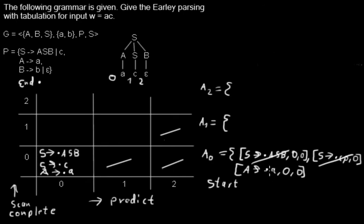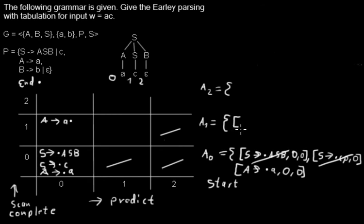Now I proceed with A→.a. Here the dot is in front of the terminal symbol A and the dot is at position 0, and the next input symbol after position 0 is an A. So I can do a scan step — I move the dot over the A and get a new item I put into the next cell. Because the item began at 0 and I moved the dot one further, the dot is now at position 1, so I write it into that cell. I add A→a. starting at 0 ending at 1 to the agenda.